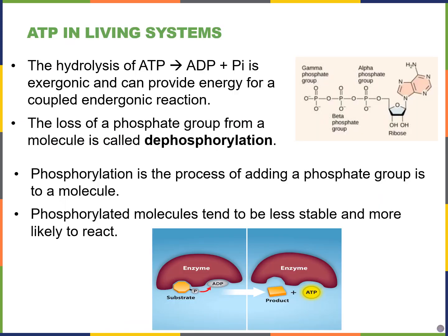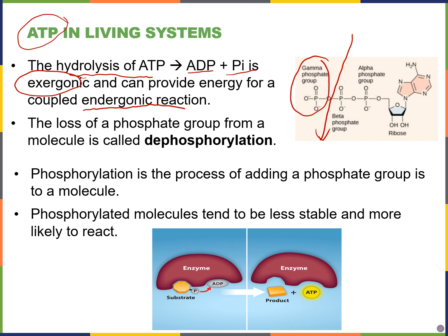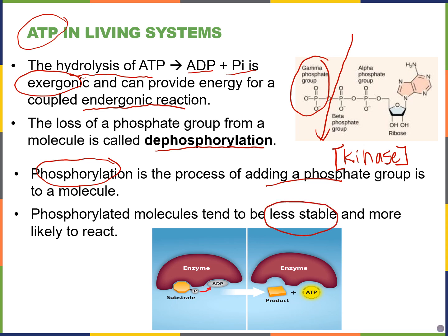Our main energy currency is ATP — adenosine triphosphate. When we hydrolyze ATP into adenosine diphosphate and an inorganic phosphate by cutting one bond, this is exergonic — it releases energy that can power endergonic reactions requiring energy input. This loss of a phosphate group is known as dephosphorylation. The opposite — adding a phosphate group — is phosphorylation, often done by enzymes called kinases, which is a generic term for enzymes that phosphorylate molecules. Phosphorylating a molecule tends to make it less stable and more likely to react.